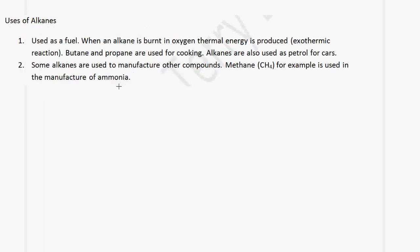You need to be able to give some examples of uses of alkanes. Alkanes are used as fuels — when an alkane is burnt in oxygen, thermal energy is produced and the reaction is exothermic. Butane and propane are used for cooking. Alkanes are also used as petrol for cars. Some alkanes are used in the manufacture of other compounds; methane, for example, is used to manufacture ammonia.